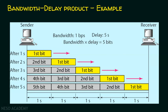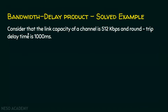Let's see an example with numerics. Consider the link capacity of a channel is 512 kilobits per second, and the round-trip delay time is 1000 milliseconds. For now, ignore the round-trip delay time — that will be covered in the next lecture. We are taking the link capacity of 512 kilobits per second as the bandwidth, and the delay is 1000 milliseconds. We want to find how many bits will be on the link after 1000 milliseconds.